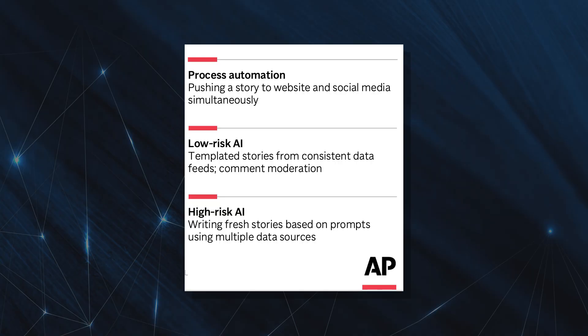AI technology powers certain kinds of automation, but there are ways to automate things without AI. Let's talk about that range of automation. There's simple process automation — something like an automated trigger that you set up to publish an article to your website and social media simultaneously.